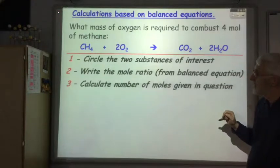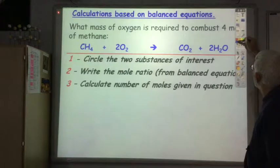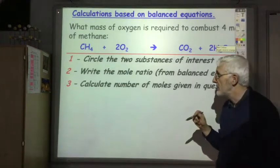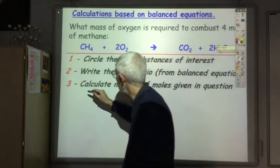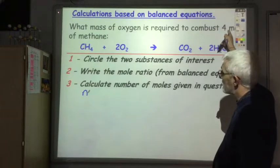Thirdly, we calculate the number of moles given in the question, and this is the point at which different questions deviate. Sometimes you'll just be given n, the number of moles, as you are in this question, four moles.